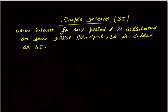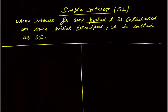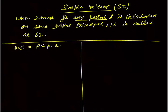Simple interest: whenever the interest for any period of time is calculated on the same initial principal, it is called simple interest. Let's set up variables. Rate of interest (ROI) is R% per annum, meaning the annual rate of interest is R%.